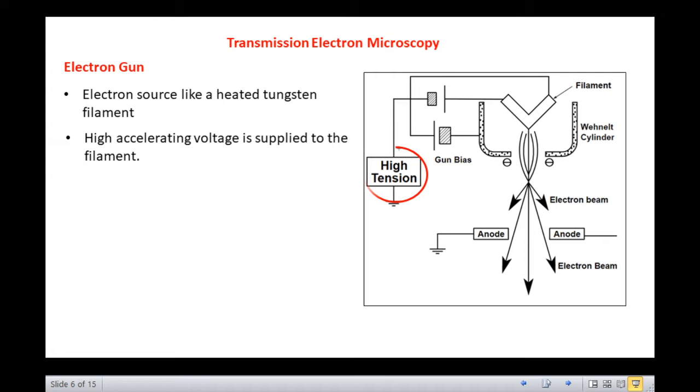A high accelerating voltage is supplied to the filament. The acceleration voltage is between 50 to 150 kV. The higher it is, the shorter are the electron waves and the higher is the power of resolution.